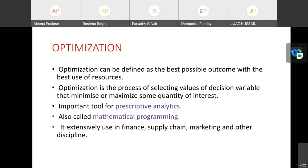Next we are discussing about optimization. Optimization can be defined as the best possible outcome with the best use of resources. Optimization is the process of selecting values of decision variables that minimize or maximize some quantity of interest. It's also known as mathematical programming. It's a family of tools designed to solve managerial problems in which decision makers must allocate scarce resources among competing activities to optimize a measurable goal. It's an important tool for prescriptive analytics. It is extensively used in finance, supply chain, marketing and other disciplines.